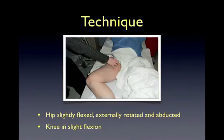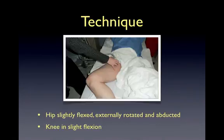Technique for performing lower extremity ultrasound for the evaluation of DVT begins with proper patient positioning. To increase the distension of the leg veins, patients may be placed in reverse Trendelenburg position and/or with 30 to 45 degrees of head elevation. The leg should be positioned with the hip slightly flexed, externally rotated, and slightly abducted with the knee in slight flexion. A high-frequency linear array probe is the preferred probe for most patients, held in transverse position with the indicator to the patient's right, perpendicular to the vein.